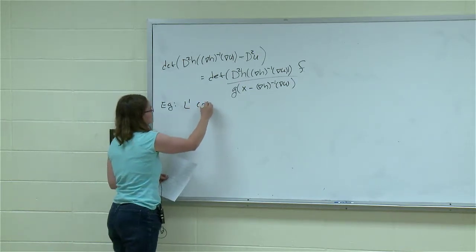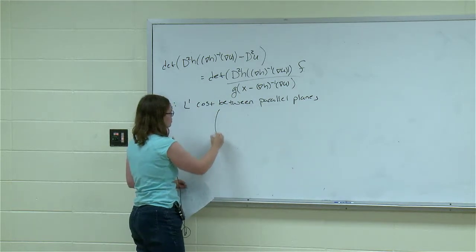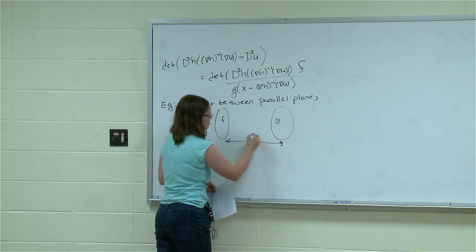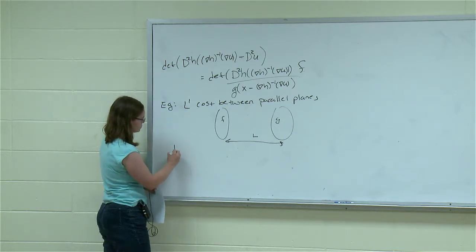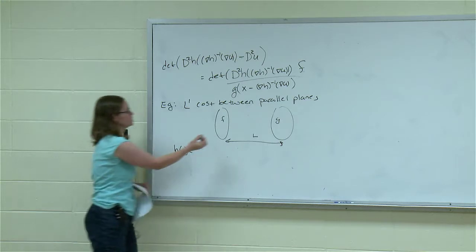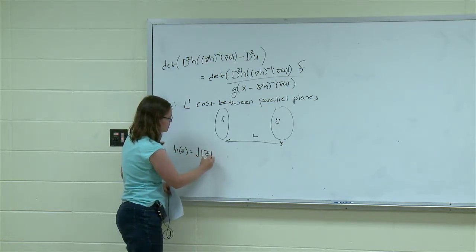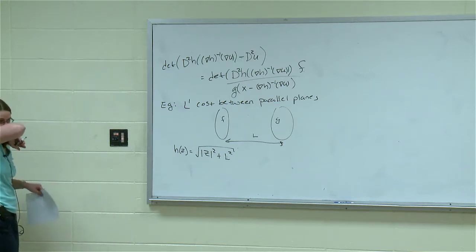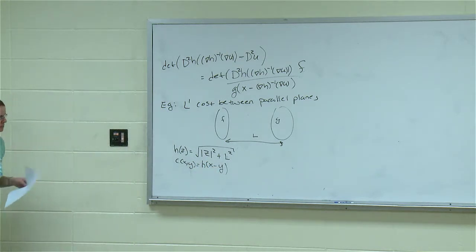I have one density supported on this plane and another density supported on a parallel plane, and my cost is going to be the L1 distance between them. So if we do an L1 cost between parallel planes — one density is out here, one density is out here, and these are a distance L apart — then my cost is going to be determined by the cost in these coordinates, which are two-dimensional in this example. So that's z squared plus the separation of the planes. And we said that the cost is then equal to h of x minus y. So this is my transport cost.